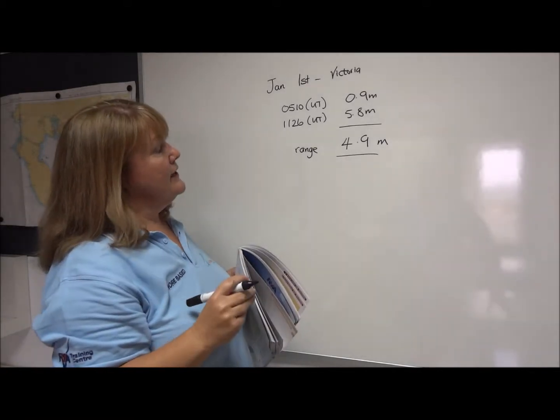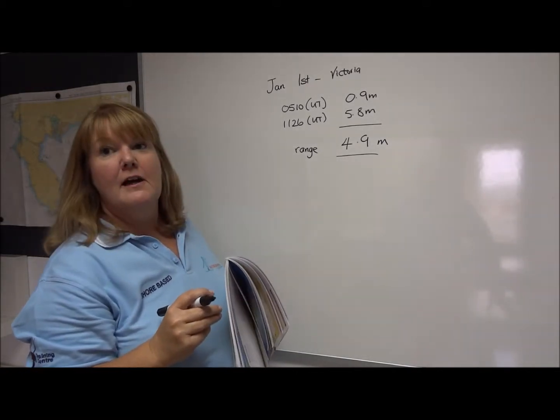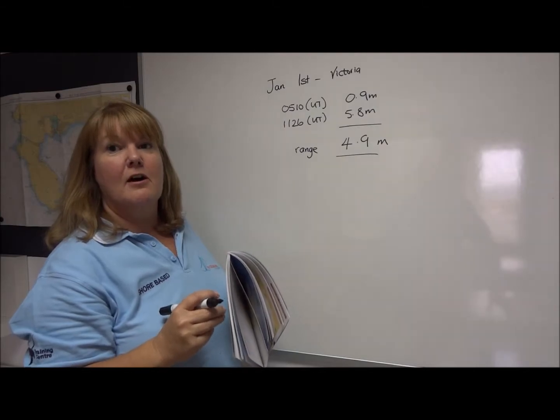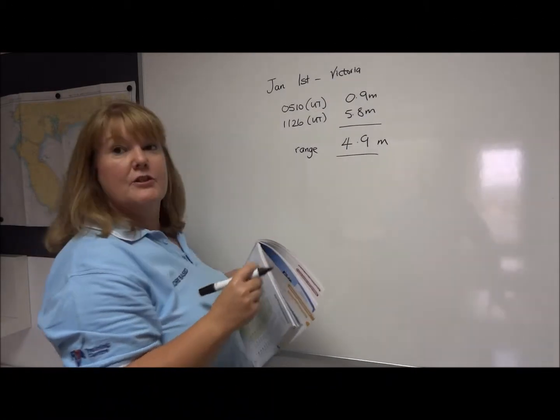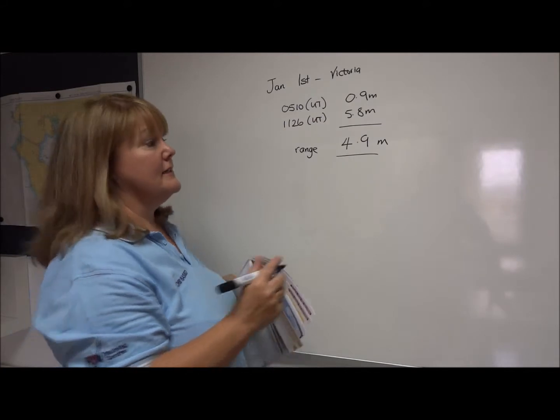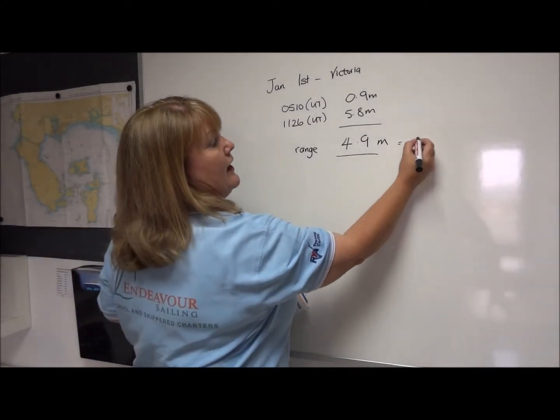Now if we go ahead a couple of pages you'll see this little graph and you can see from this little graph it says that if the range today is 4.9 metres we are on a spring tide.